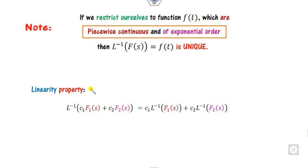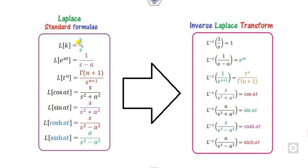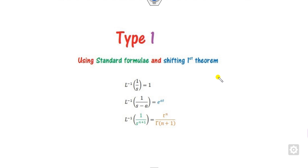The inverse Laplace satisfies the linear property: whenever you want to find the Laplace inverse of a sum, you can simply split it term by term. Now, we can see there are some standard Laplace transform pairs. Based on these, you can easily find the Laplace inverse. For example, the Laplace inverse of 1/s is 1, and 1/(s−a) gives the exponential e^(at), and so on. Based on this standard notation, we will study Type 1, where s±a or some polynomials appear in the denominator.